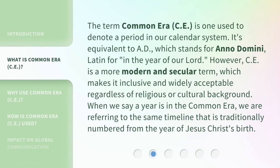The term Common Era, CE, is one used to denote a period in our calendar system. It's equivalent to AD, which stands for Anno Domini, Latin for 'In the Year of Our Lord.' However, CE is a more modern and secular term, which makes it inclusive and widely acceptable regardless of religious or cultural background.